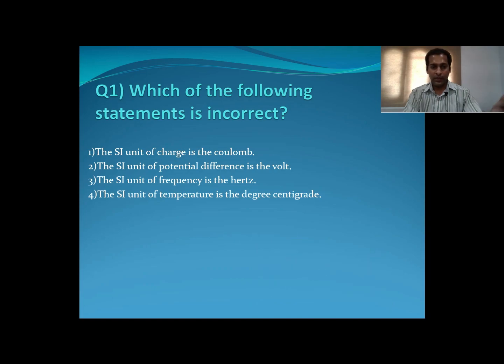So for example the SI unit of charge is Coulomb, it is a correct statement. The unit of potential difference is Volt, and frequency unit is Hertz. But temperature unit is not degree centigrade, it is Kelvin. So the wrong statement is number 4.